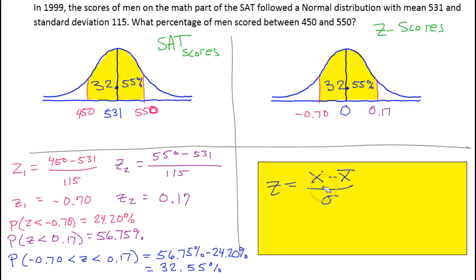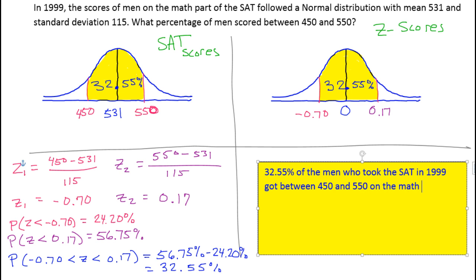In this space is where I like to answer these questions in a complete sentence. This is a real-world problem, and any time you have a real-world problem, you shouldn't just answer with a number. You have to include the context, what the problem is about. So I will say something like this: 32.55% of the men who took the SATs in 1999 got between 450 and 550 on the math part.